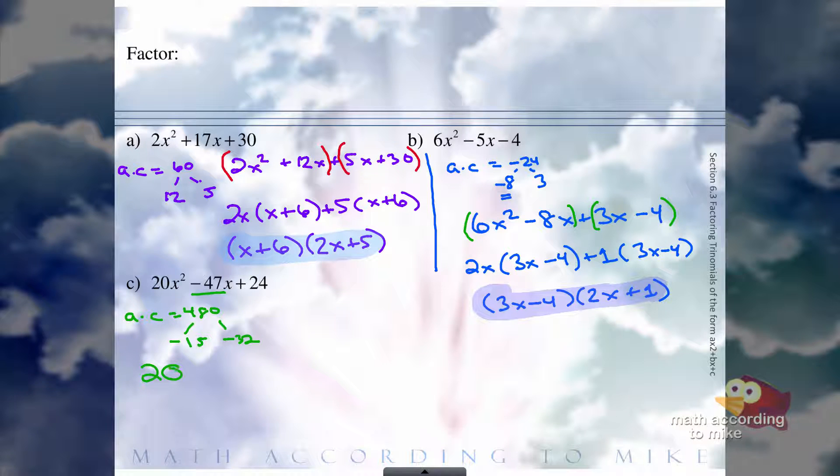Alright, breaking it up. Be careful here. We have 20x squared minus 15x minus 32x plus 24. Grouping 2 by 2. Group the first 2. Again, put the negative with the third term and put a plus sign in between.